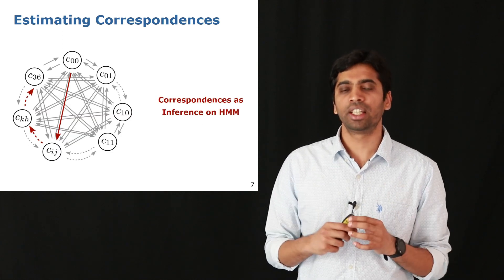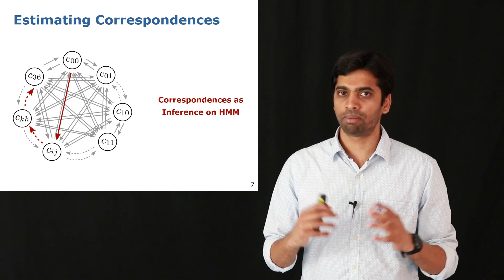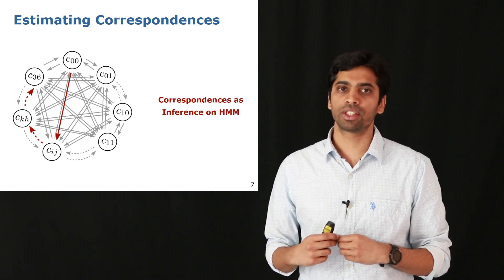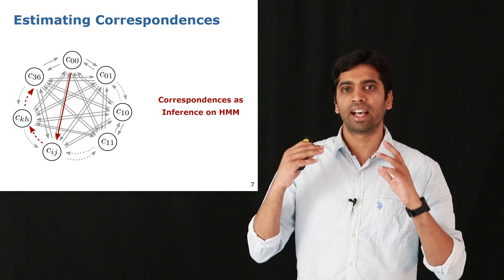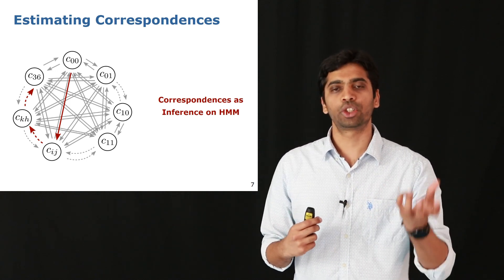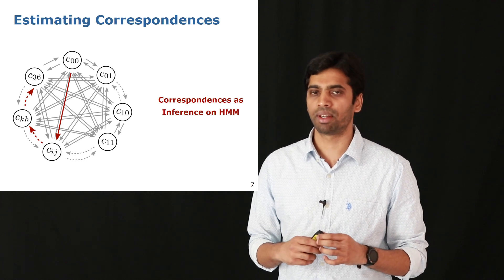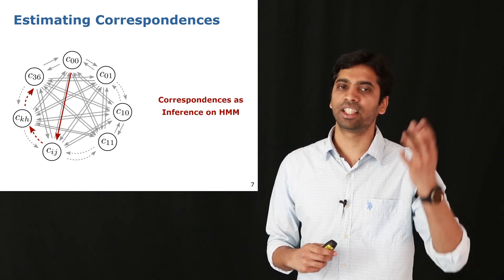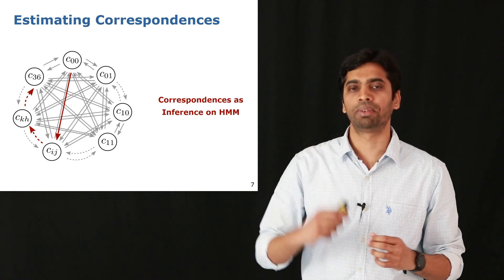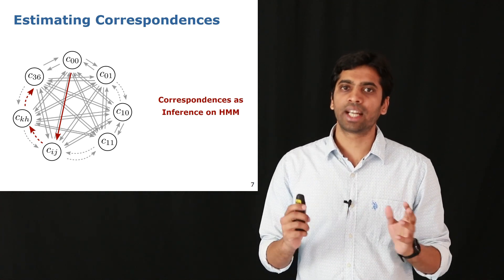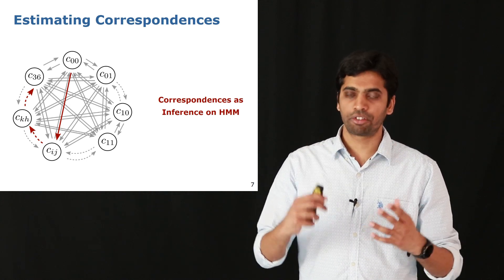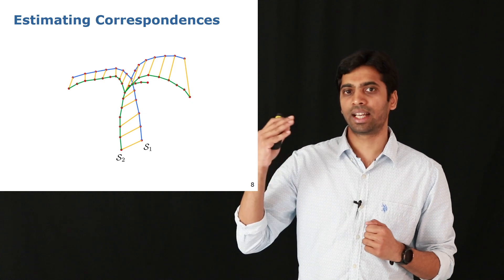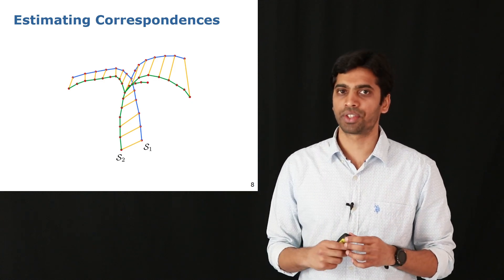Once we define these costs, we put them in an HMM model by computing these costs for all pairs of correspondences, and then the optimal set of correspondences that we want is obtained as an inference on this HMM. Here the answer of the inference problem is illustrated in the red lines on the HMM diagram. We use the standard Viterbi algorithm to perform the inference, and the output is the correspondences between skeleton S1 and S2, shown by the yellow lines here.